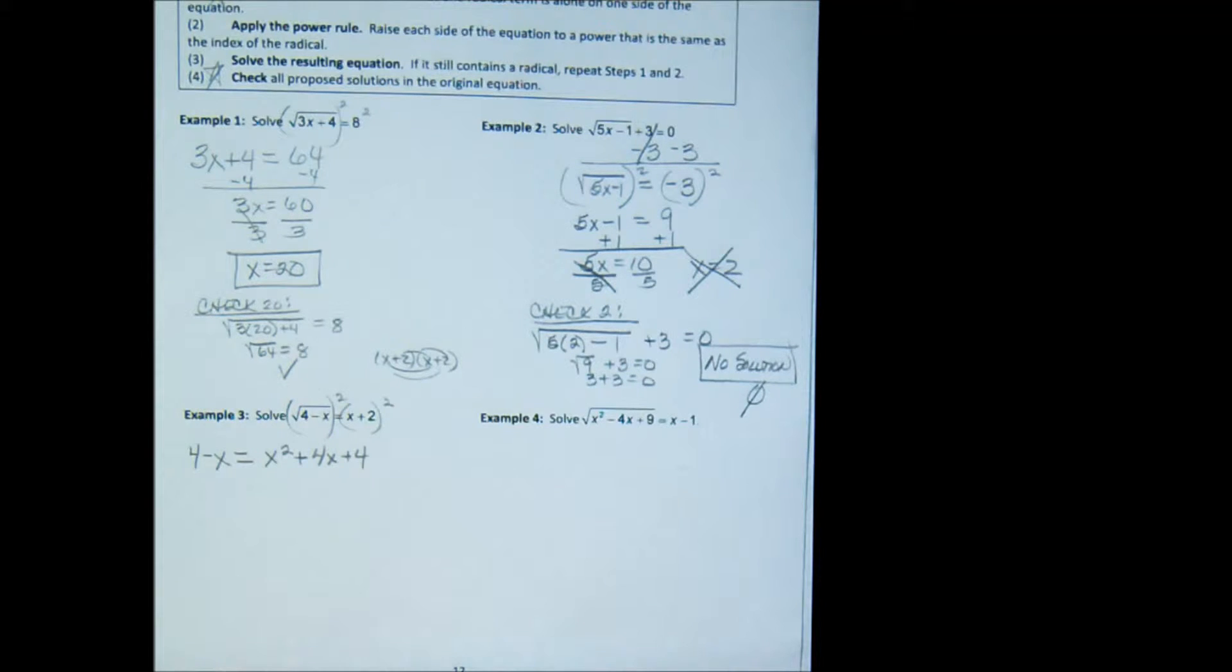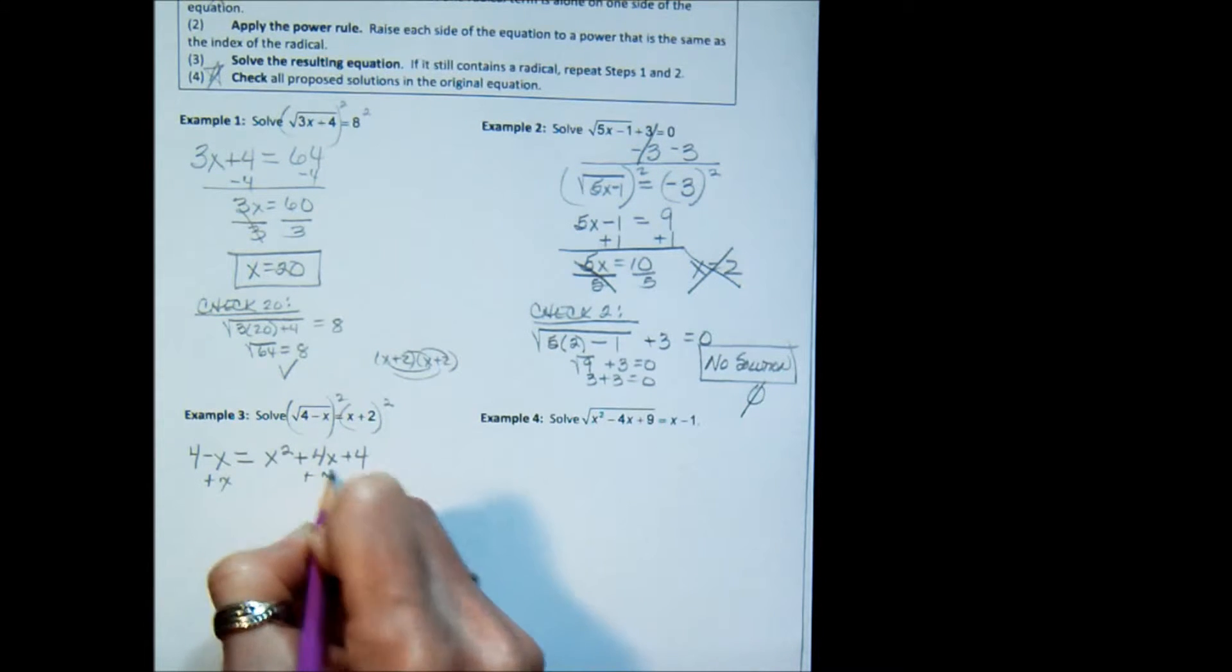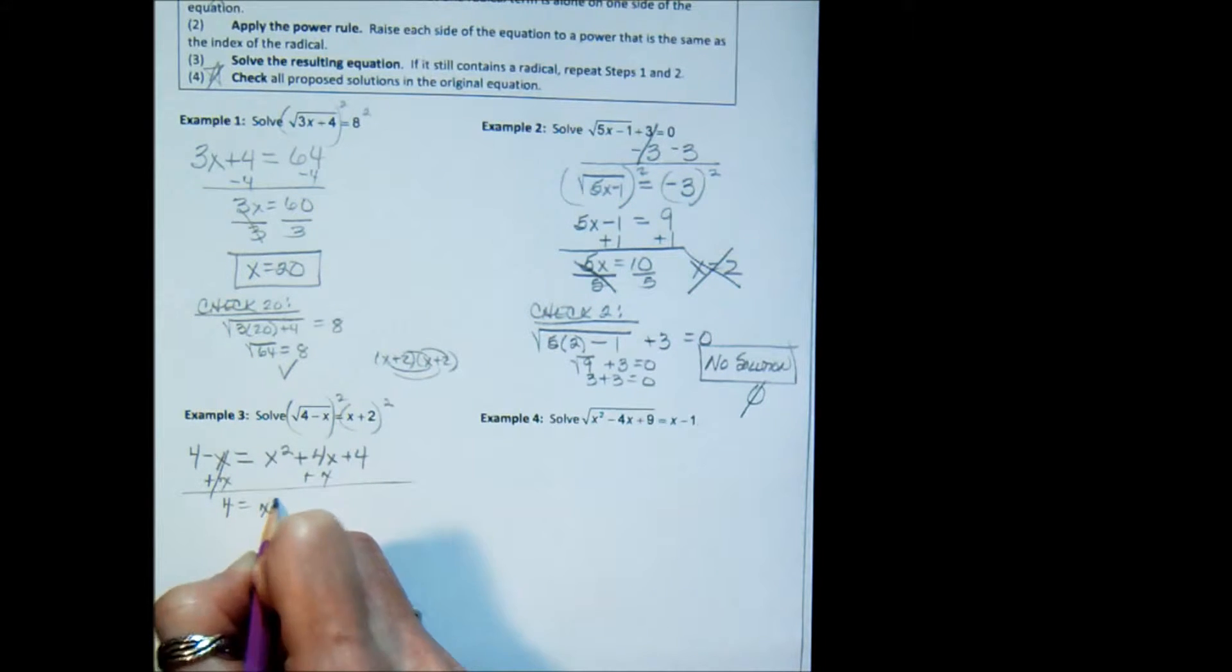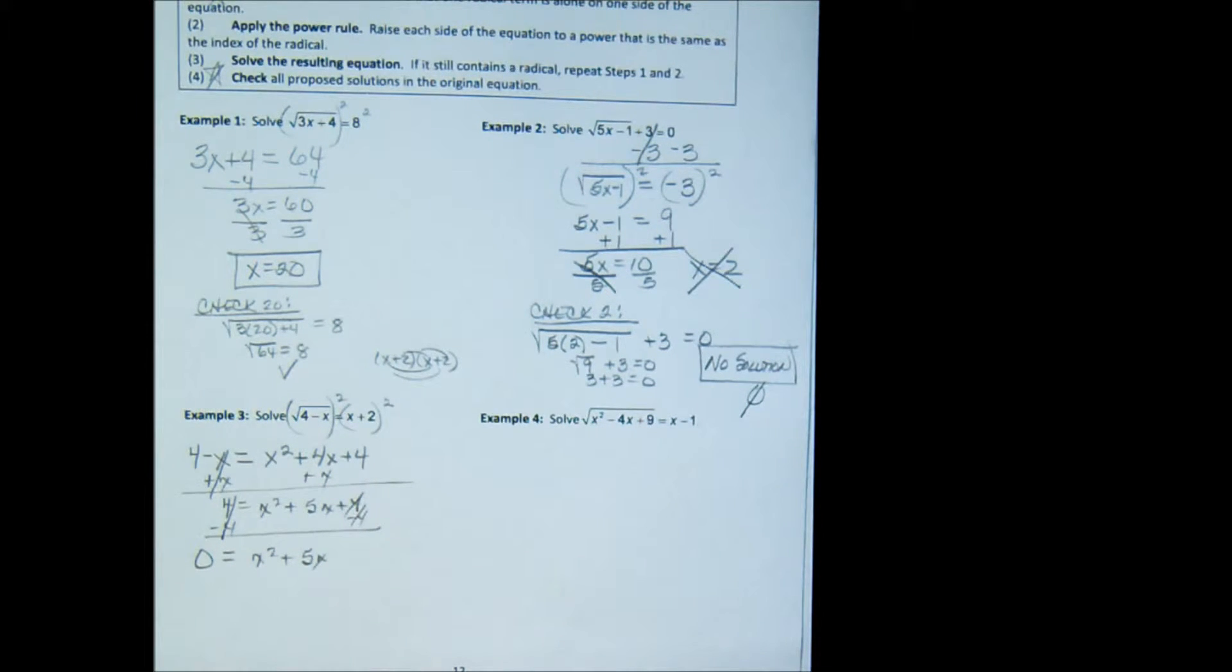Now, you'll notice that I have a squared term here. I have a quadratic. And the only way we know at this point to solve a quadratic is to get it equal to 0 and factor. So I'm going to add an x to both sides. That gives me 4 equals x squared plus 5x plus 4. I'm going to subtract a 4 from both sides. And I have 0 equals x squared plus 5x. We're now going to use the 0 factor property. I'm going to factor it by factoring out a GCF of x. And now I apply the property by saying either x equals 0 or x plus 5 equals 0. I subtract 5 from both sides and I get x equals negative 5.